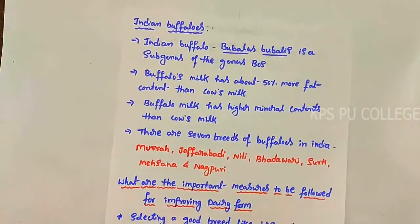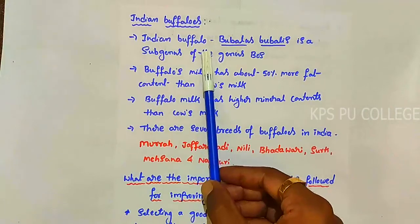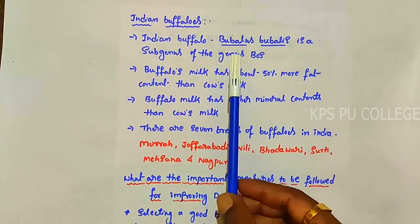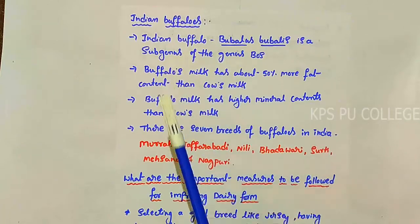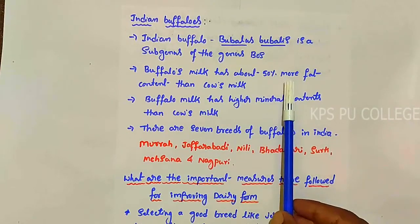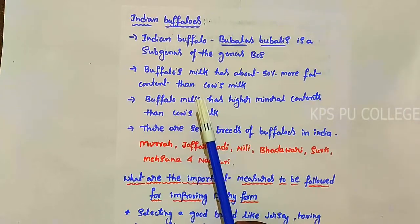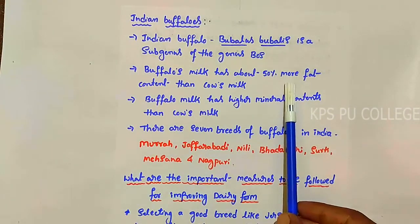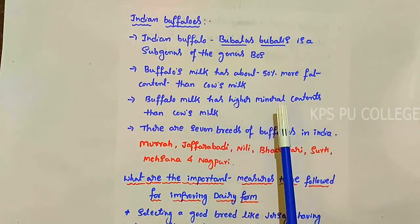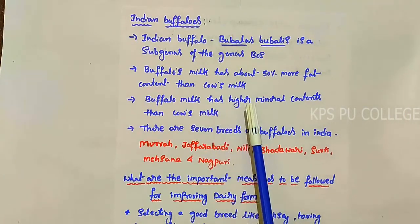After the cattle breeds, the next topic is Indian buffalo breeds. Bubalus bubalis is a sub-genus of the genus Bos. An important point: buffalo's milk has about 50% more fat content than cow's milk. Buffalo milk also has higher mineral content than cow milk.